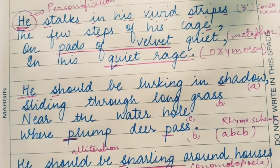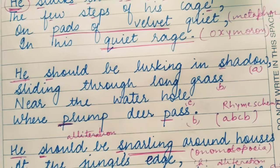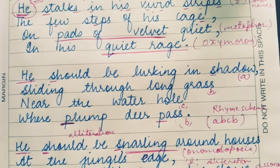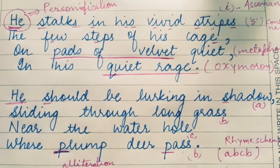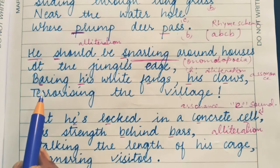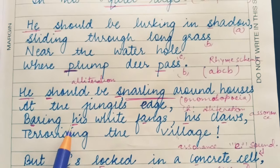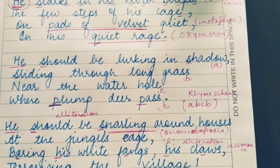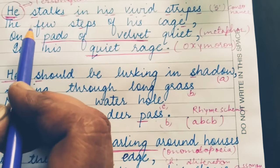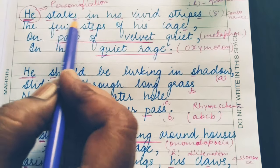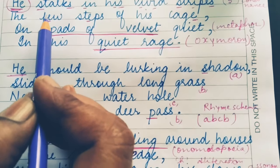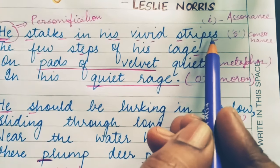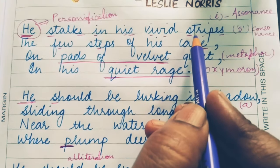Next is consonance. Consonance is a poetic device in which the same consonant sound is repeated without a fixed sequence — the sound may come at the beginning, middle, or end of words that are closely placed in a line. Here you can see the example: 'He stalks in his vivid stripes.' The S sound has been repeated — in 'stalks,' 'his,' 'stripes.' This is an example of consonance.